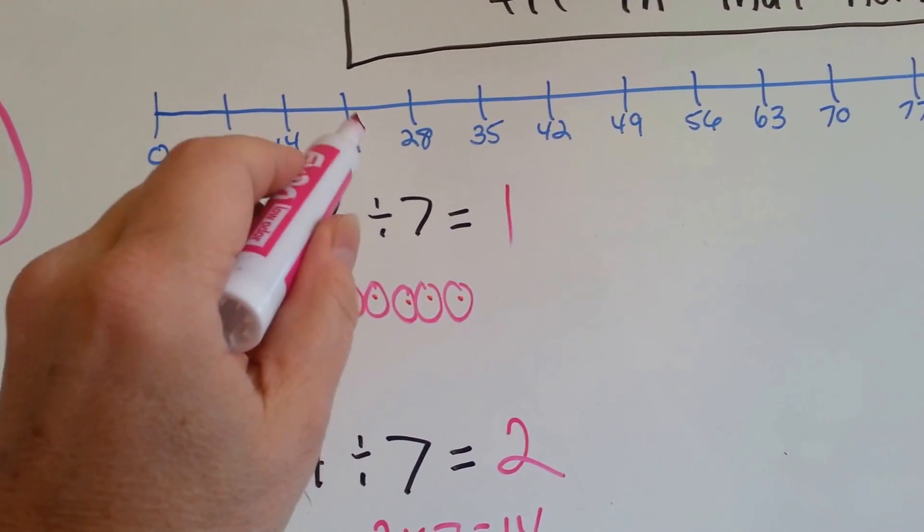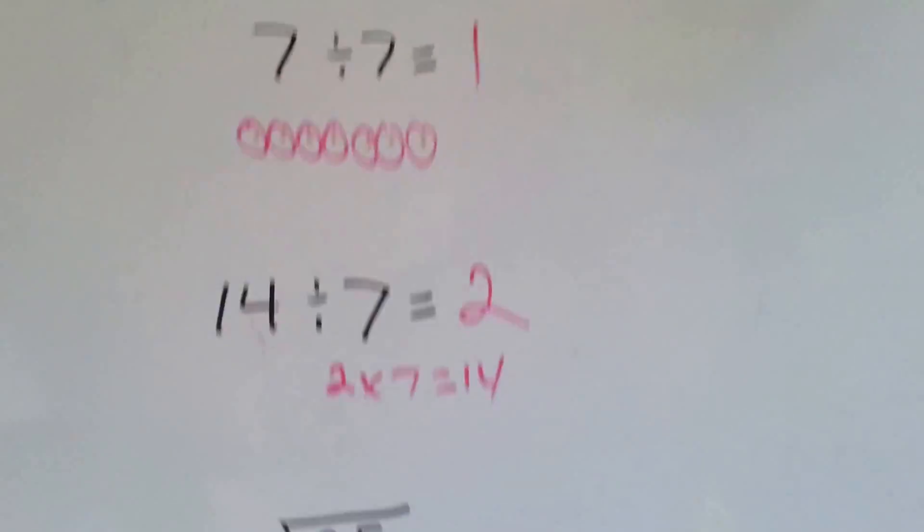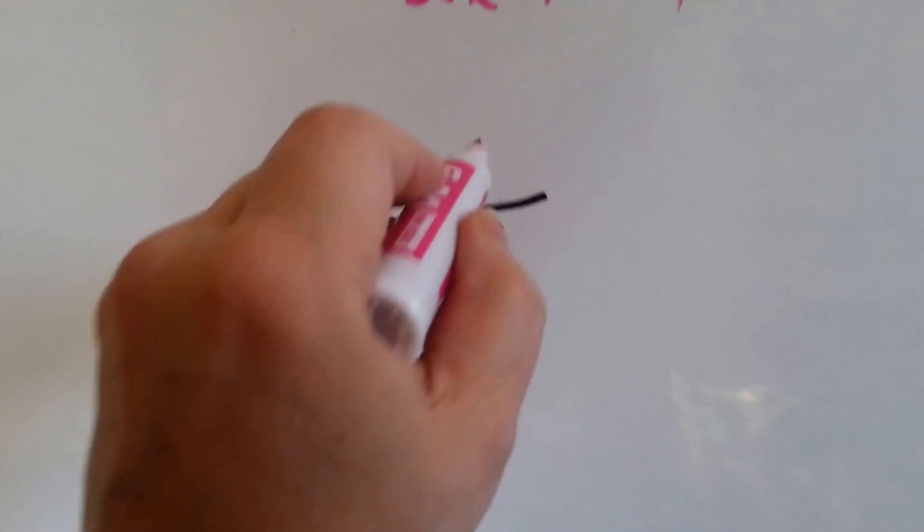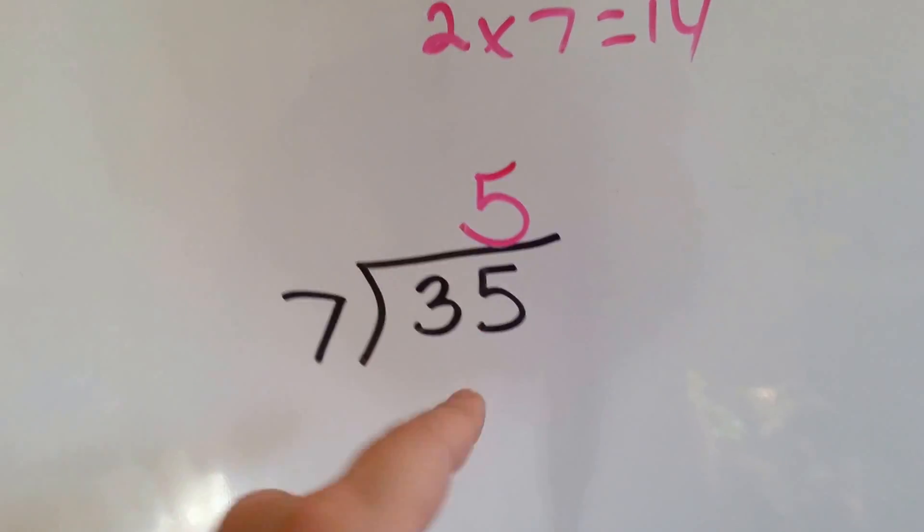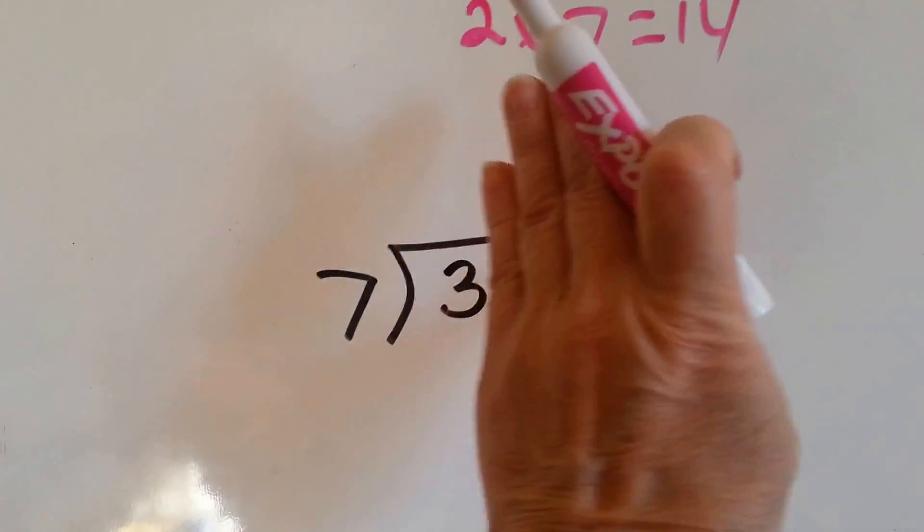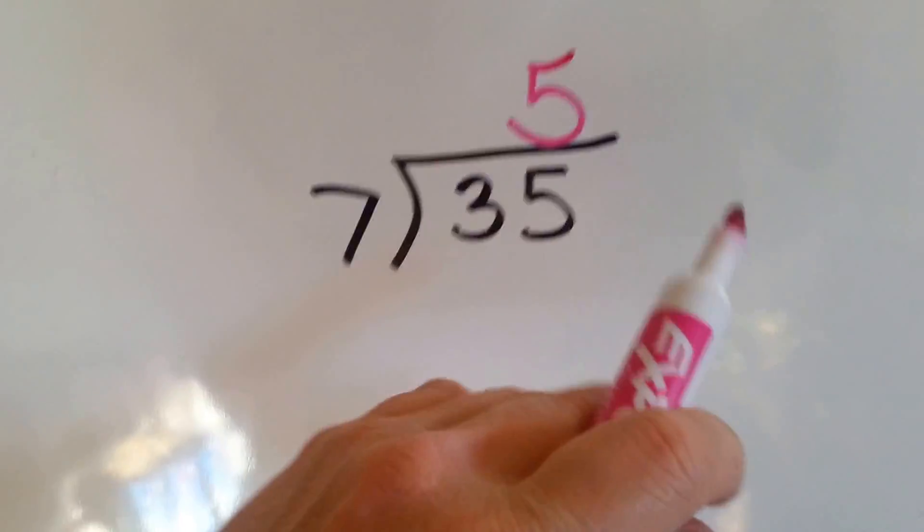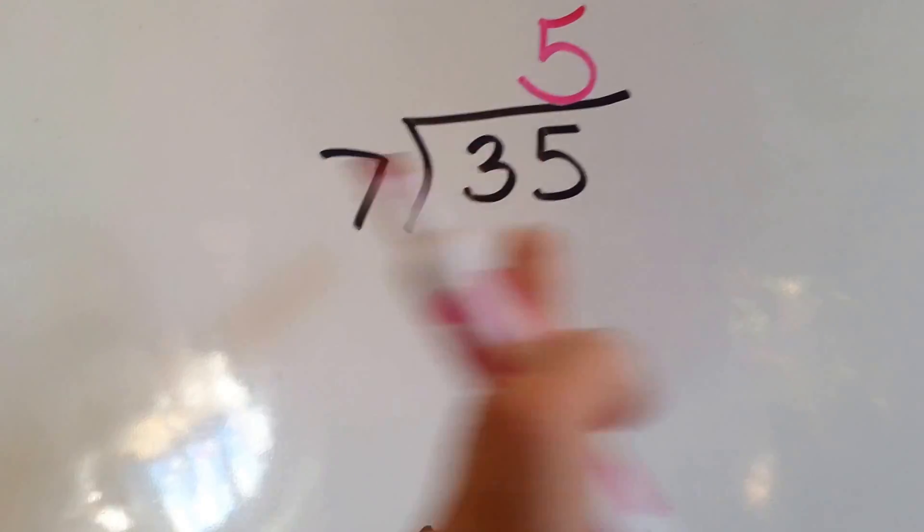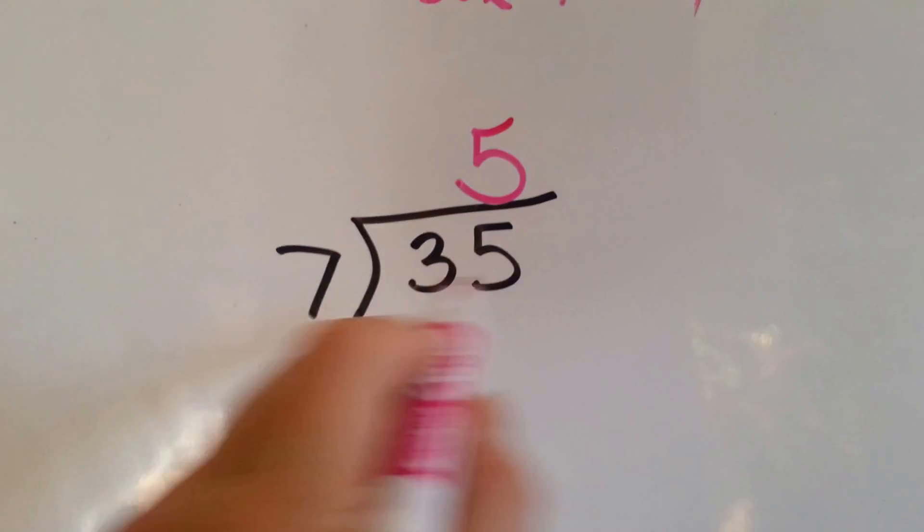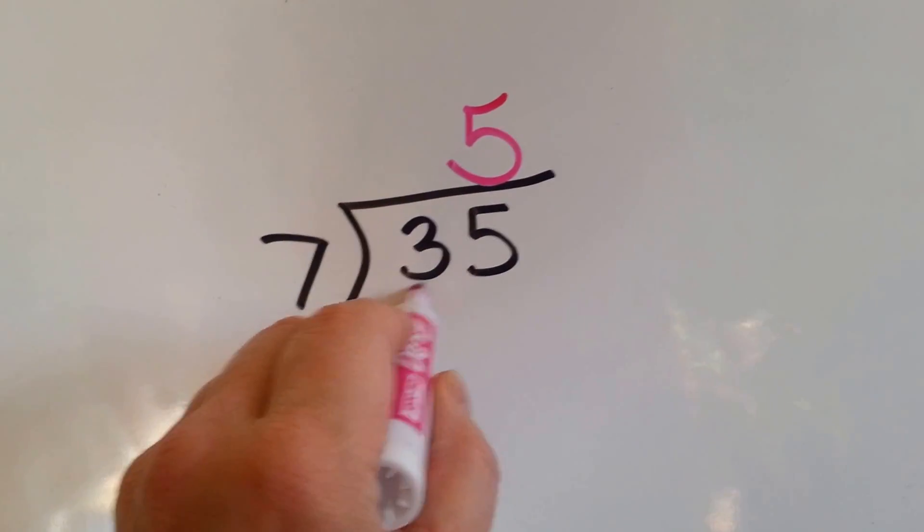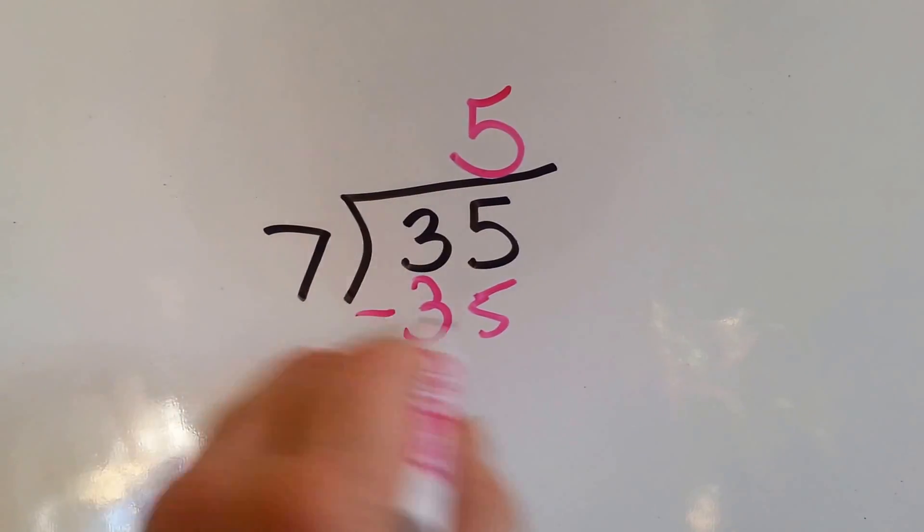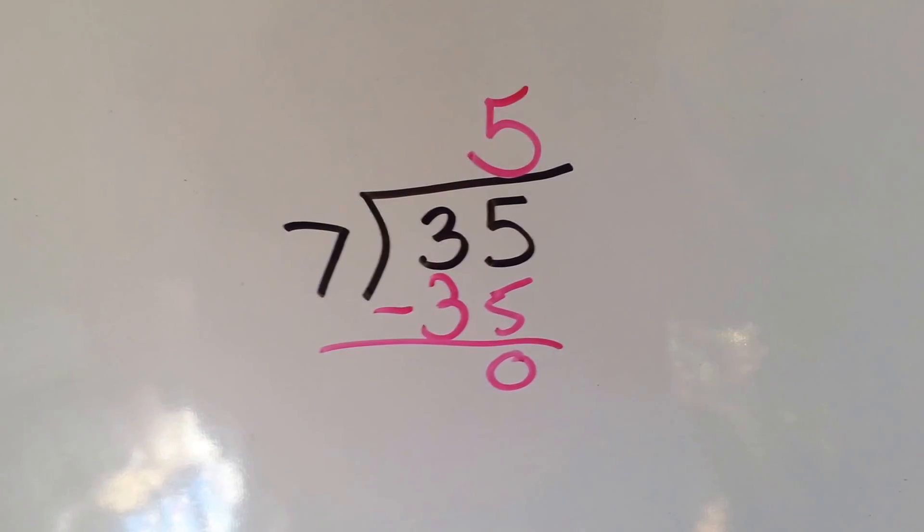So, here's the 35 and we're going to count by 7s and see how many times we jump. 1, 2, 3, 4, 5. 5. And we're going to write the answer right above the 5 because we didn't put 7 into 3. We put 7 into 35. So it goes above the 1s place. 7 times 5 is 35. We do our subtraction and get a remainder of 0.